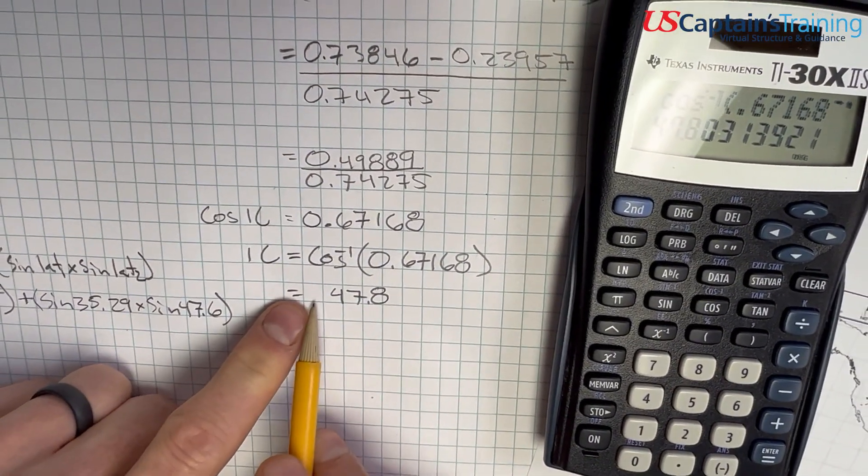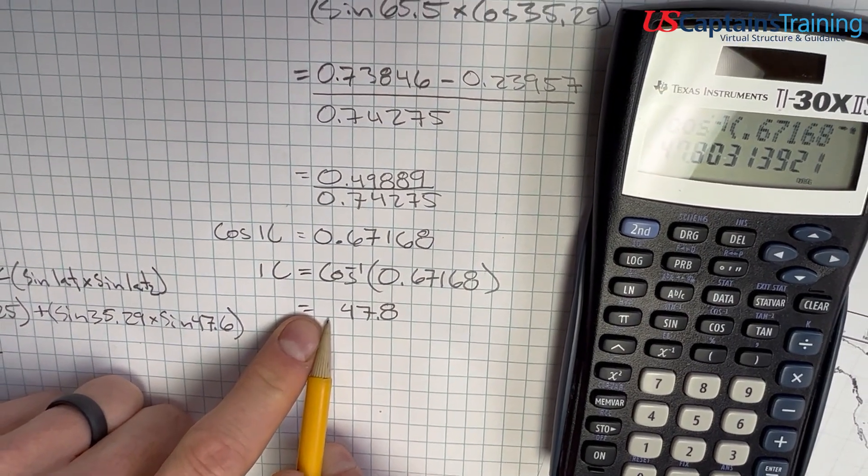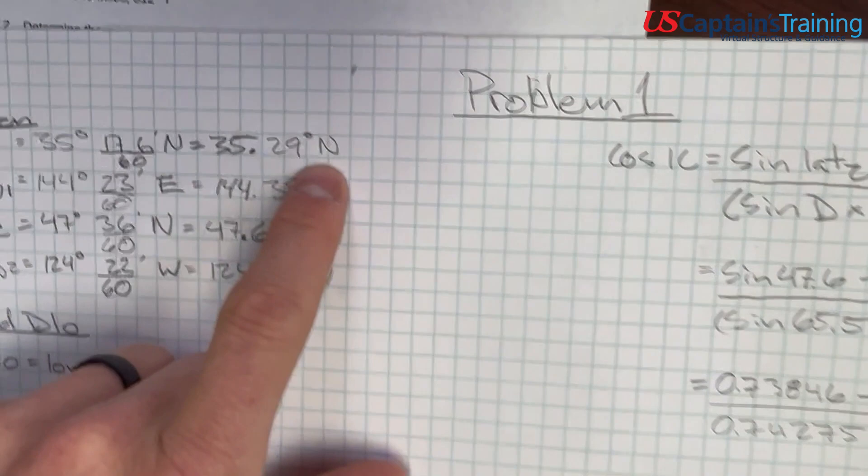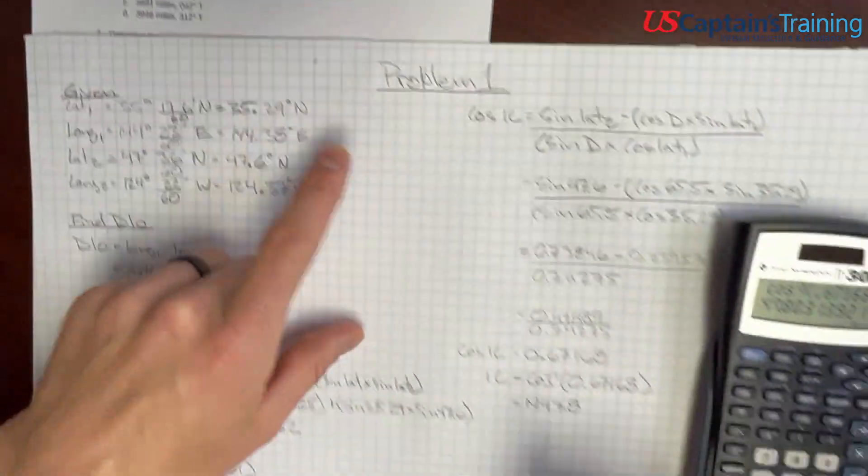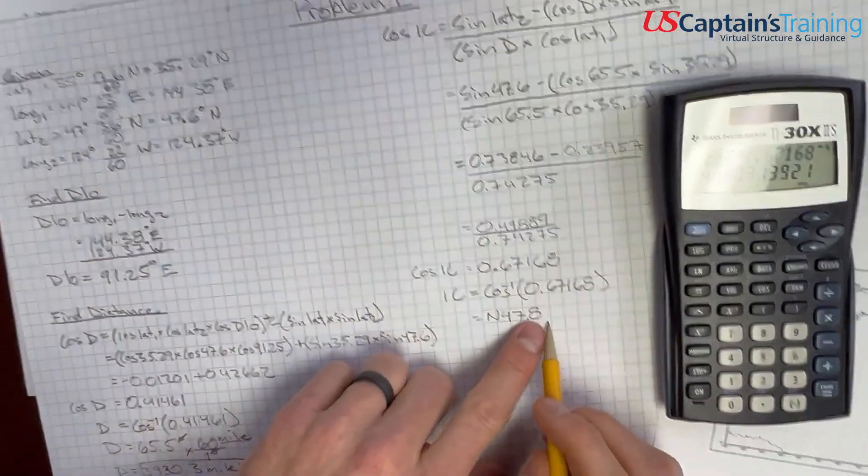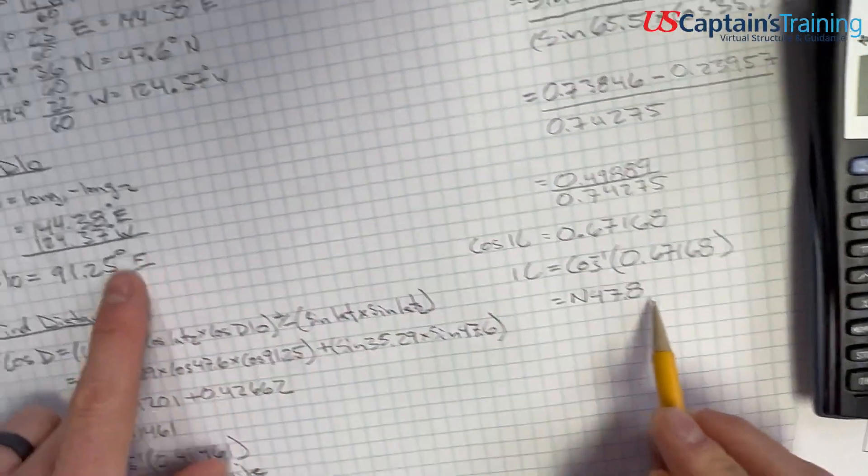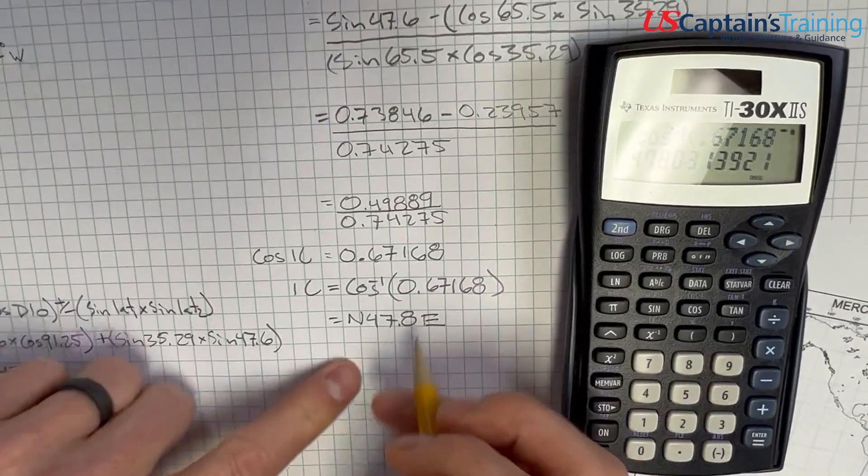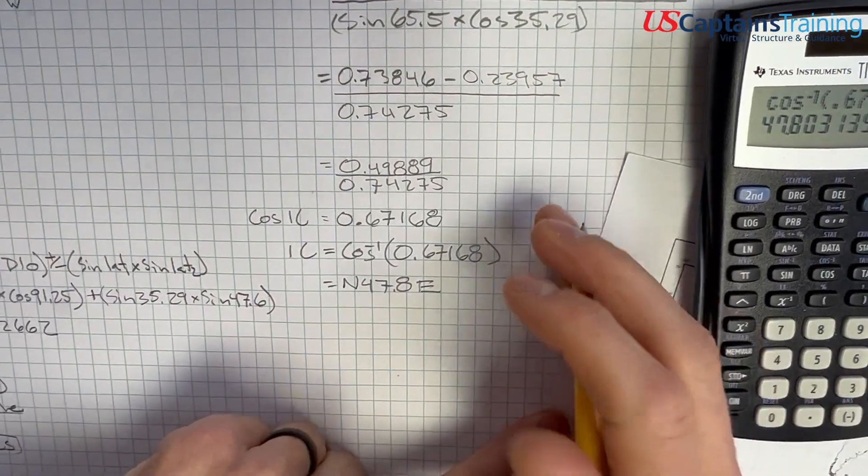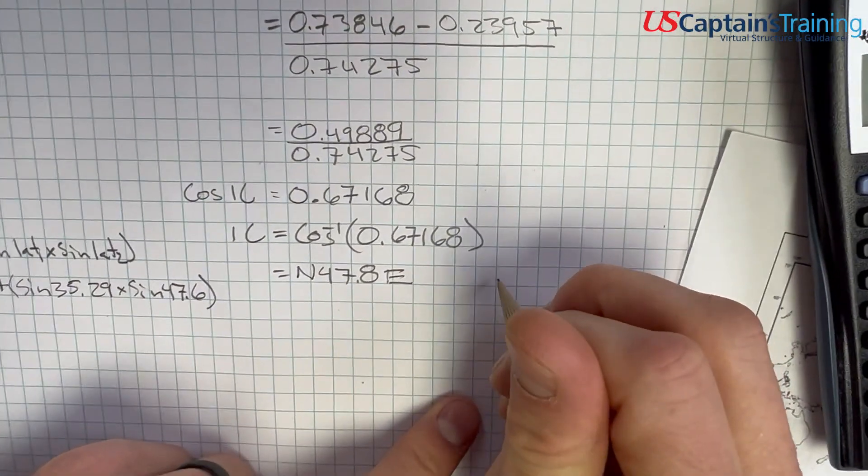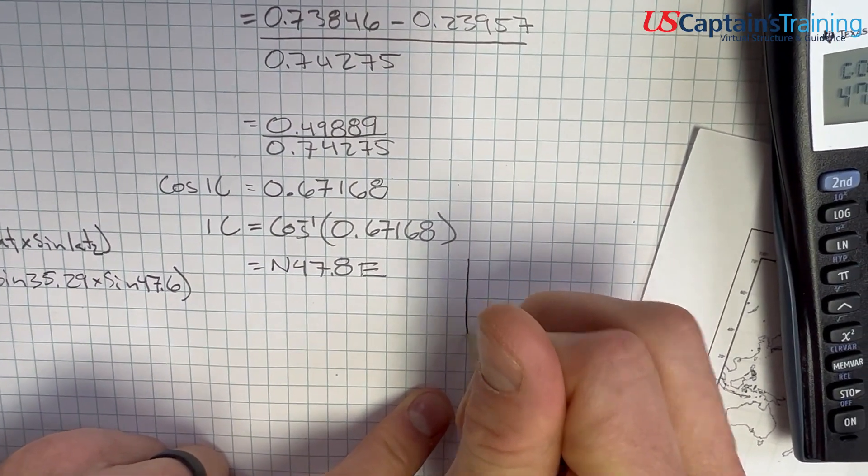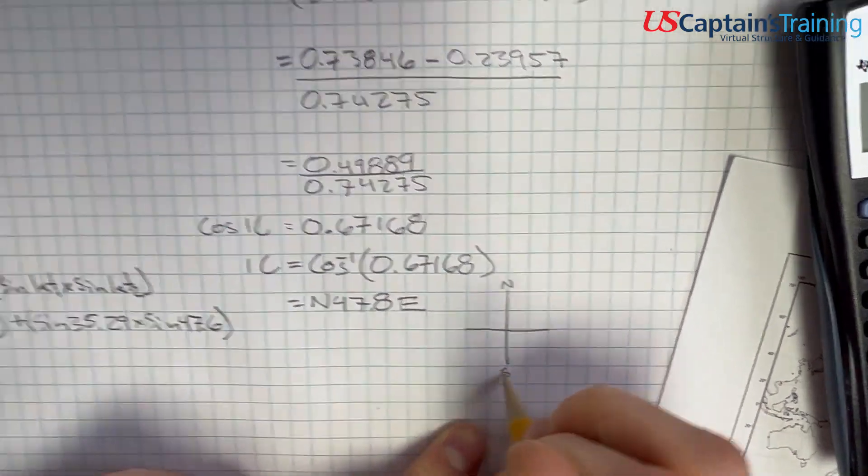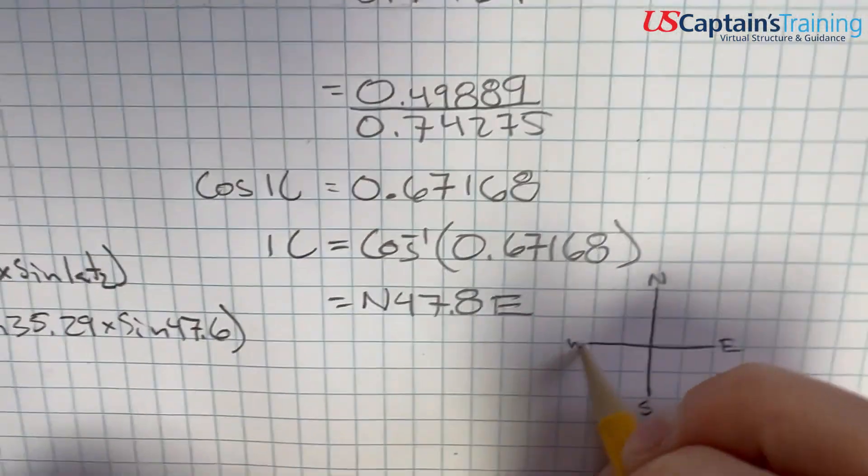And now it's named, in the front, it's named north or south based on lat 1. Lat 1 is named north. This is north. And it is named east or west based on D low. D low is east. We're north, south, east, west.